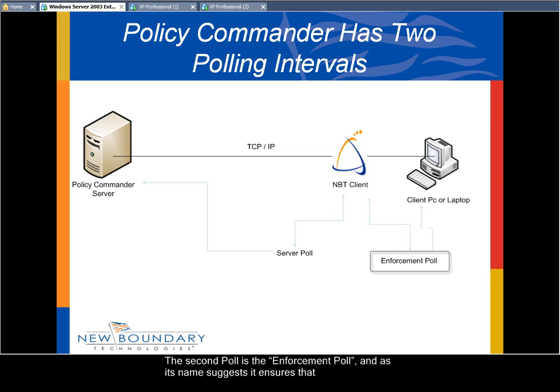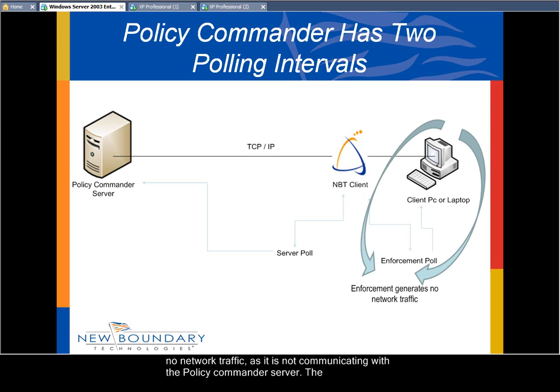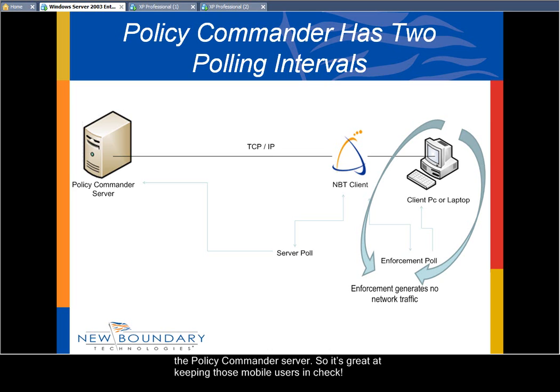The second poll is the enforcement poll. And as its name suggests, it ensures that the client computer is always in a compliant state. This poll, unlike the server poll, generates no network traffic as it's not communicating with the Policy Commander server. The enforcement of a policy or a group of policies happens independently of the network and the Policy Commander server. So it's great at keeping those mobile users in check.